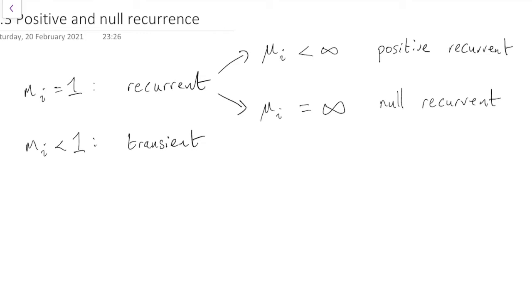Note that for transient states, obviously, if you might not return, then it goes without saying that MUI is equal to infinity there. So this is just about splitting up different recurrent cases. And that will turn out to be useful later on in the course.